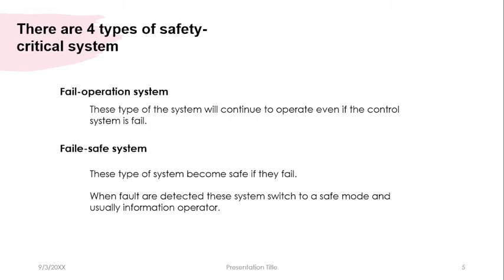There are also four types of Safety Critical Systems. The first is the Failed Operation System. This type of system will continue to operate even if the control system has failed. Examples include hardware malfunctions or software crashes, like the Google Plus security glitch and the Facebook data leaks. Just recently, Facebook software had problems — Messenger, Instagram, and Facebook were all down — and because of that, Mark Zuckerberg lost around 72 million dollars.